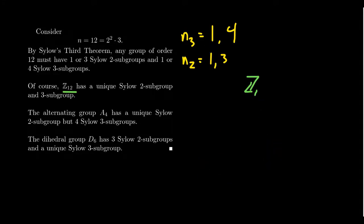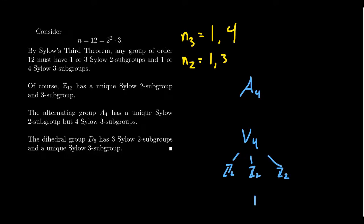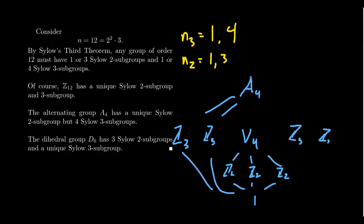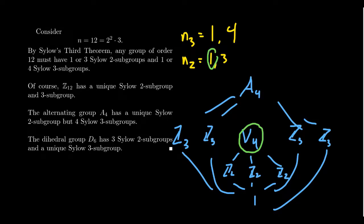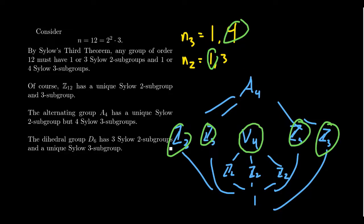For the alternating group A4 of order 12, the lattice includes the Klein four-group V4 of order 4 containing three cyclic subgroups of order 2, plus four cyclic subgroups of order 3. So A4 has N2 = 1 (the unique Sylow 2-subgroup is V4, which is normal) and N3 = 4. This realizes the possibility (N3, N2) = (4, 1).